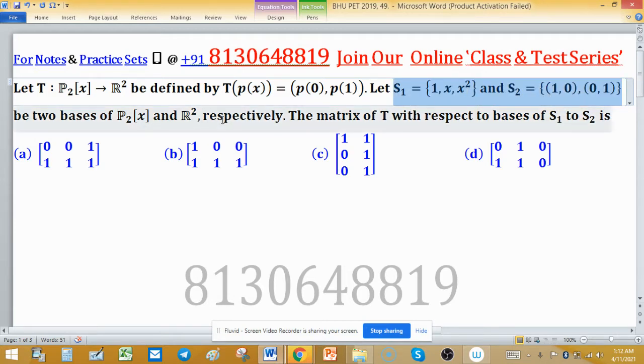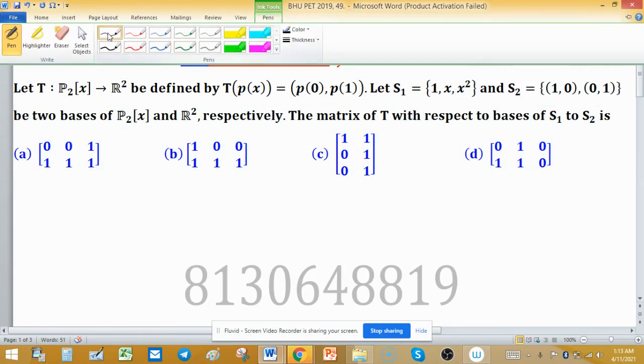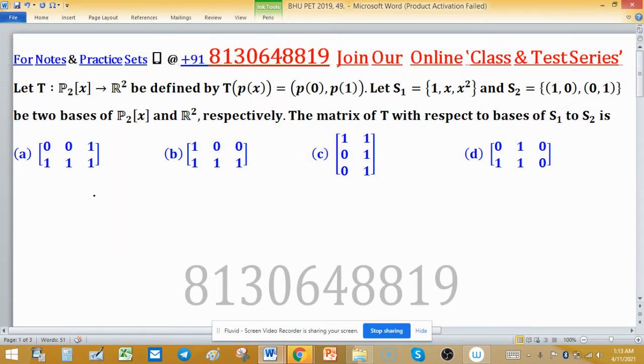The matrix of T with respect to basis S₁ to S₂ - we always find matrix representation with the help of one basis from the domain and a second one from the codomain. Here the basis for the domain is S₁ and the basis for the codomain is S₂, which is the ordered pair (1,0), (0,1).